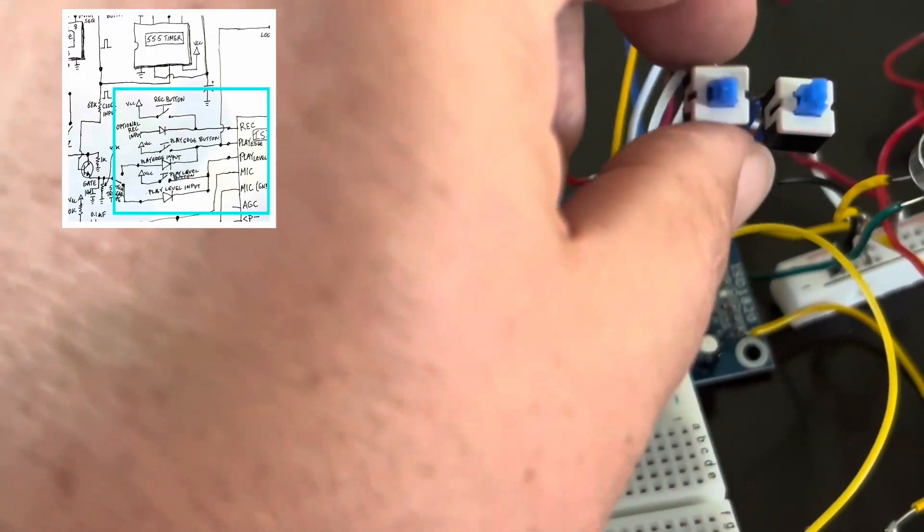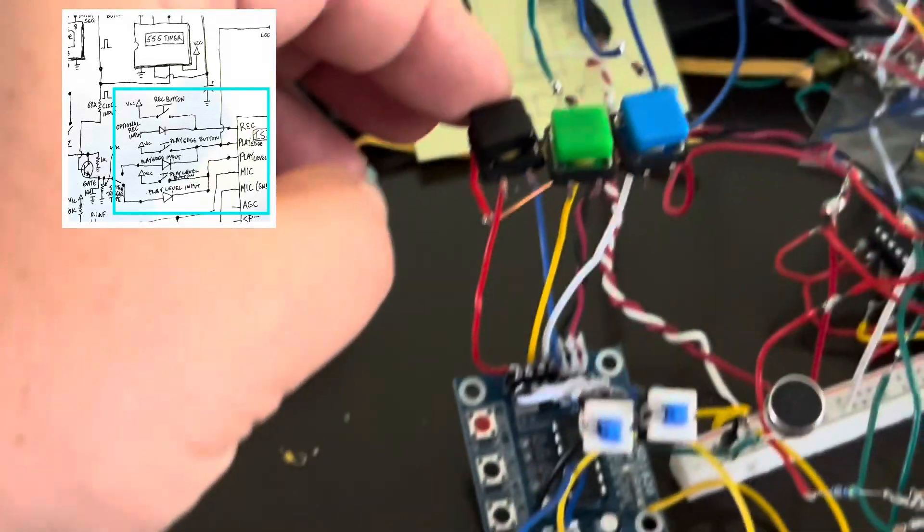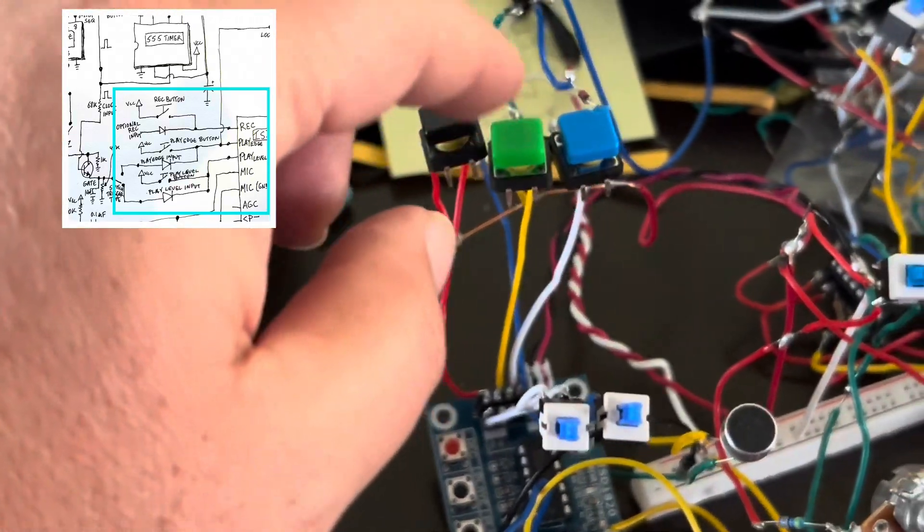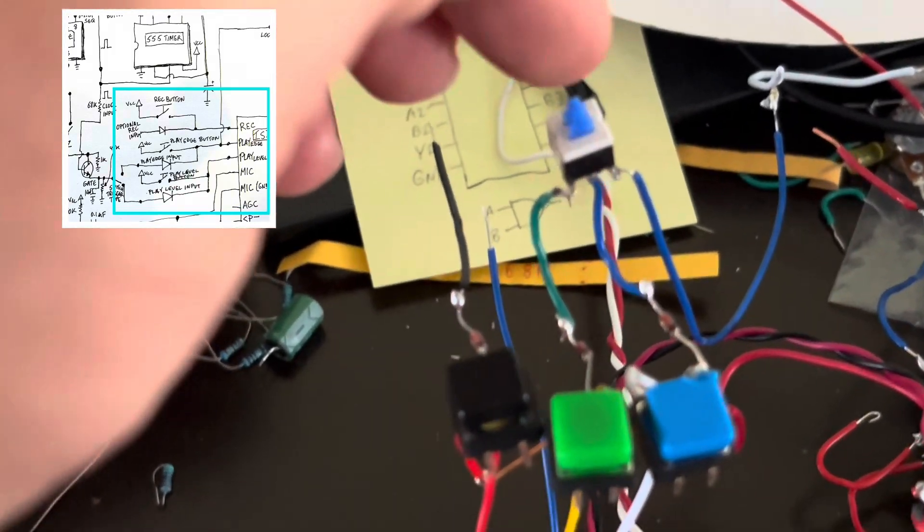I have switches here that I've added. This is for looper. This is to allow for feed through. Here are the manual switches for record, play edge, play level. And I could switch between the automated ones for play edge, play level from the sequencer.